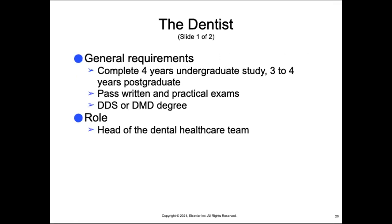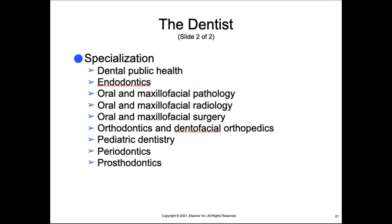The requirements to become a dentist include completing four years of undergraduate study and three to four years of postgraduate or dental school. They must pass written and practical exams, and the degree earned would be either a DDS, doctor of dental surgery, or a DMD. Their role is to be head of the dental healthcare team. They can specialize in dental public health, endodontics, oral and maxillofacial pathology, oral and maxillofacial radiology or surgery, orthodontics and dental facial orthopedics, pediatric dentistry, periodontics, or prosthodontics.